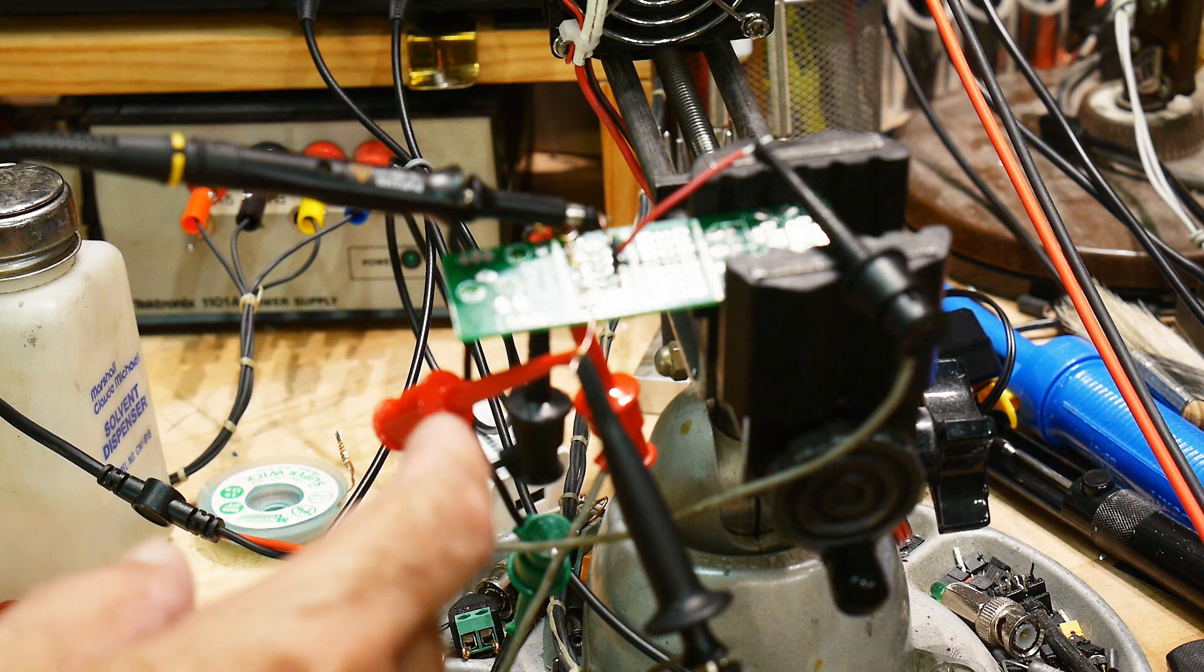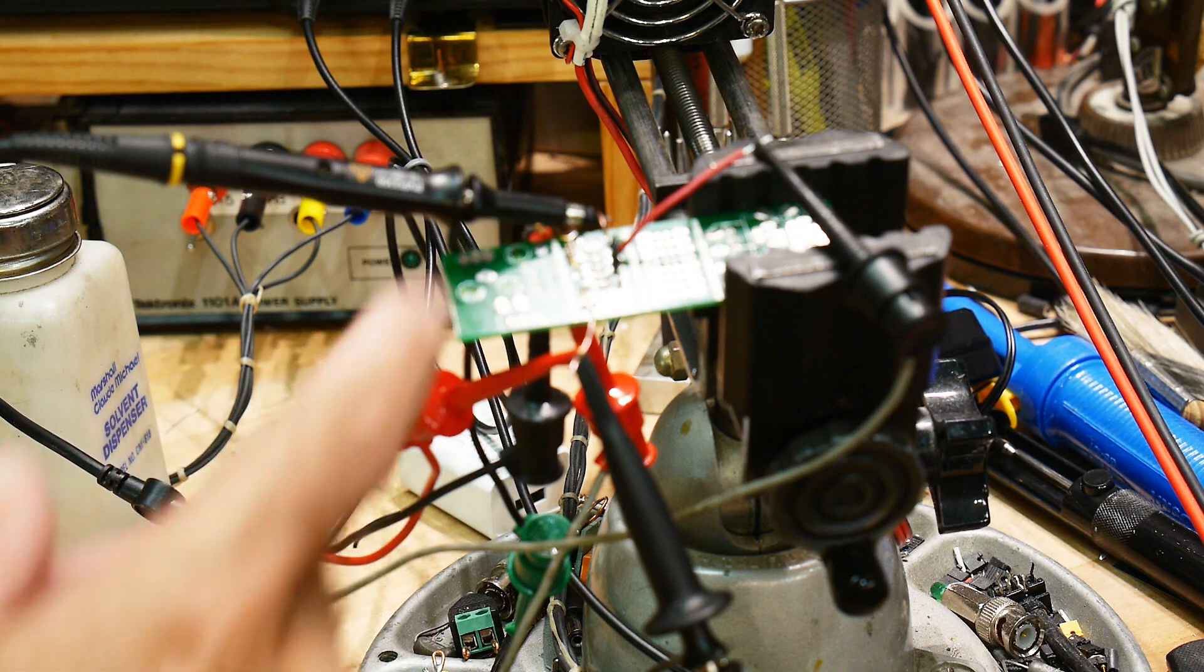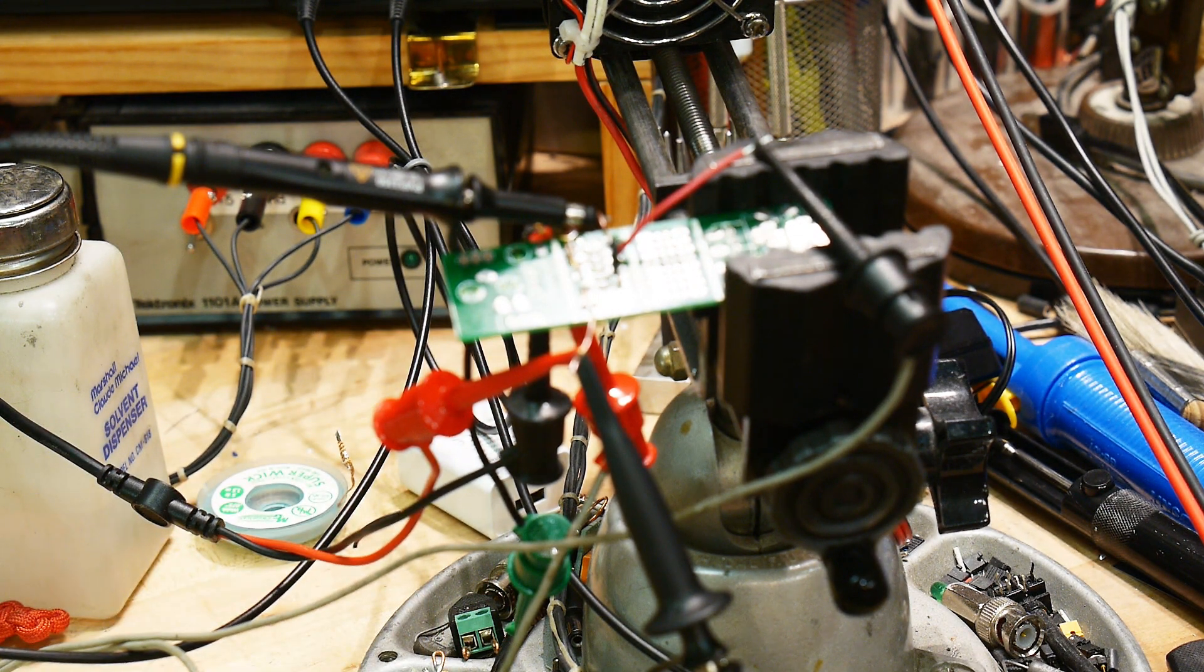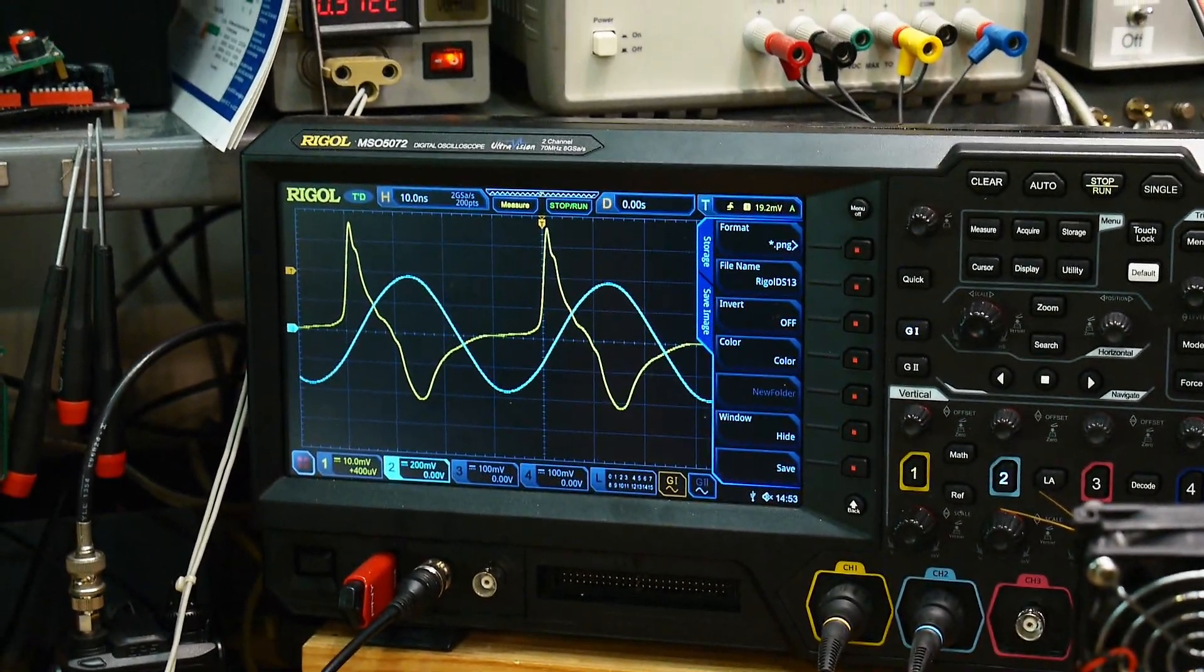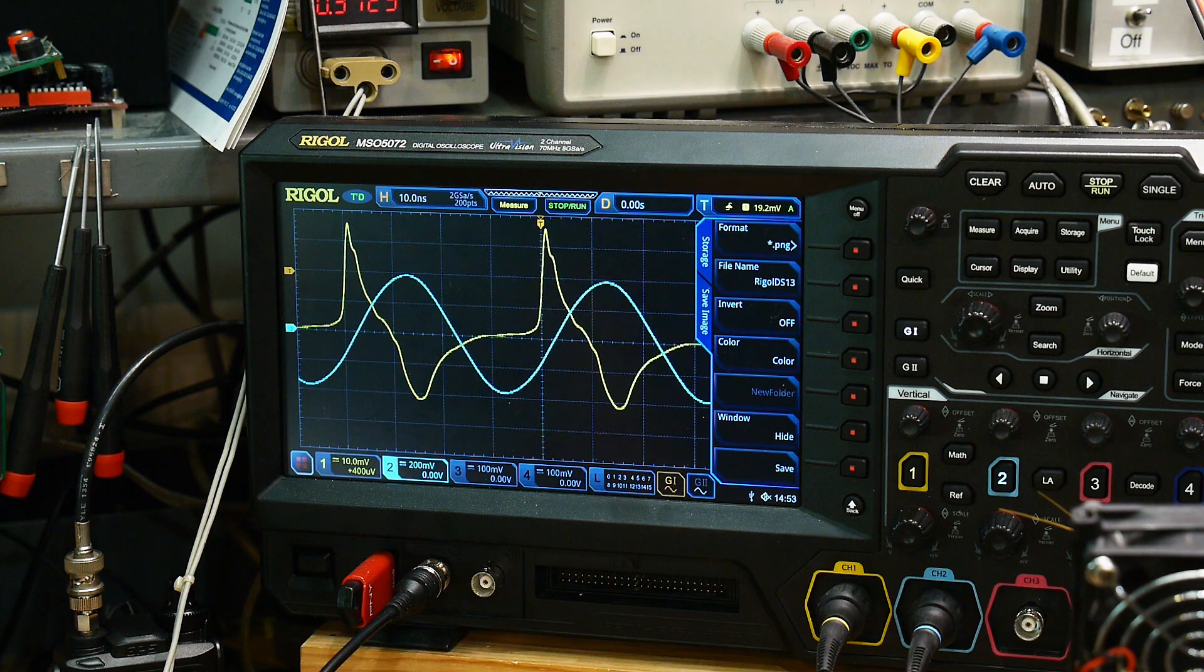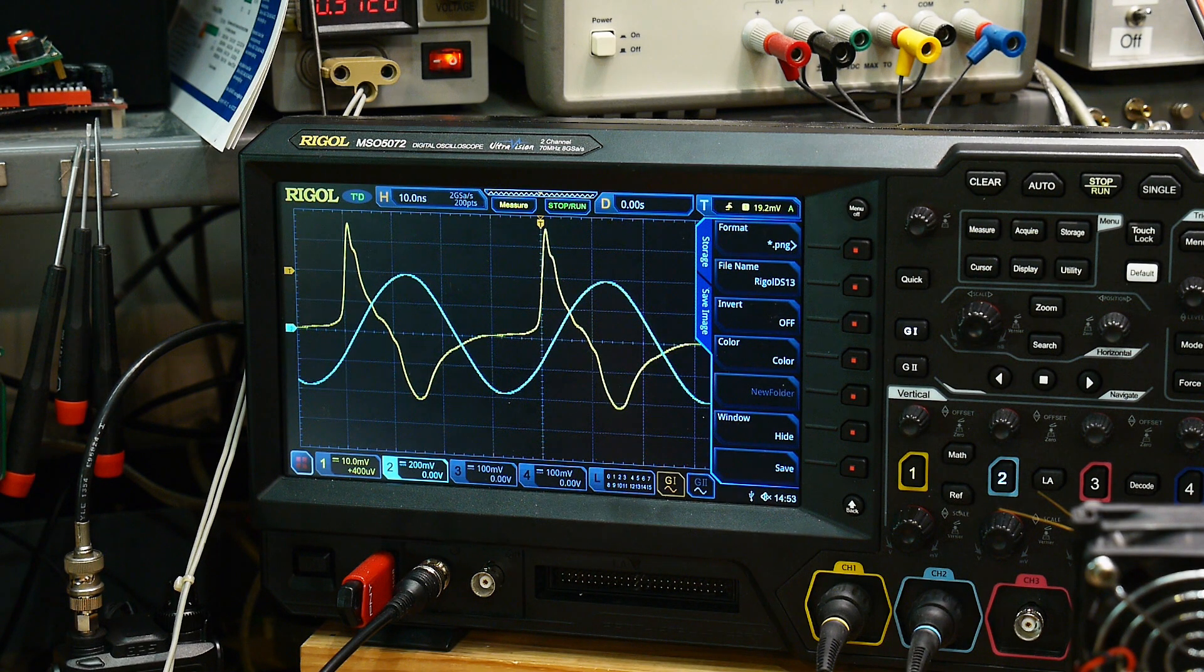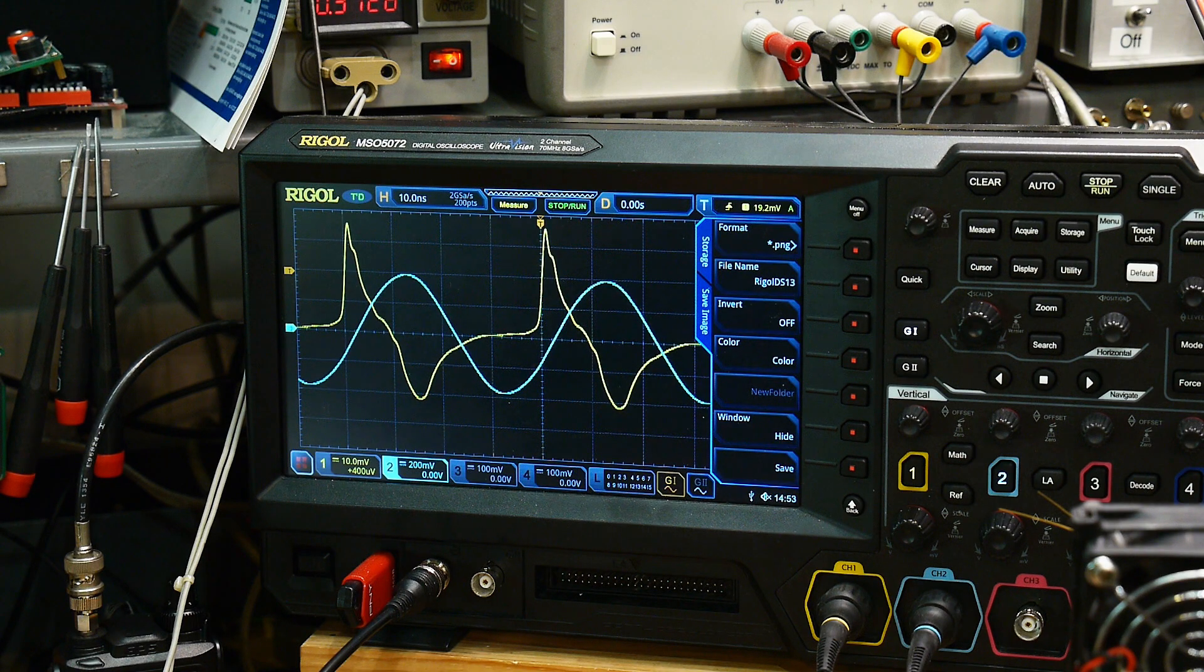Alright, so I've got some waveforms going in, I've got a 25 MHz sine wave going in, and I'm measuring the output of my circuit. And you can see over here that we're getting some sharp rise times. You can see the input is the cyan trace, the blue trace, and the output is the yellow trace.